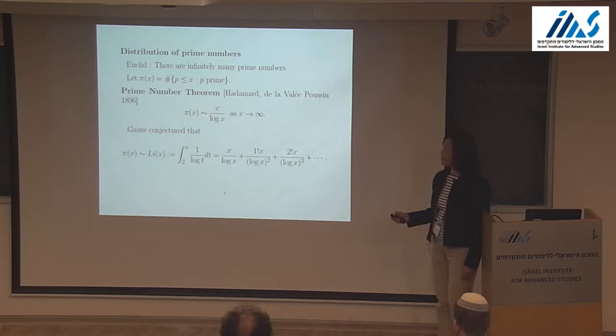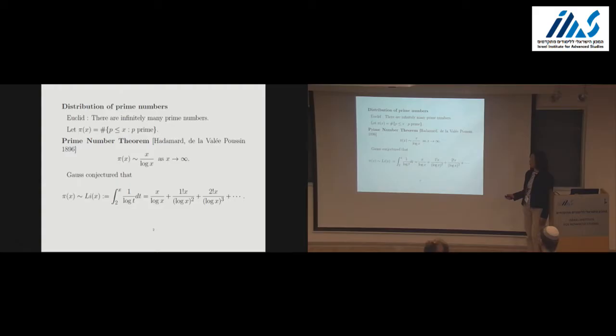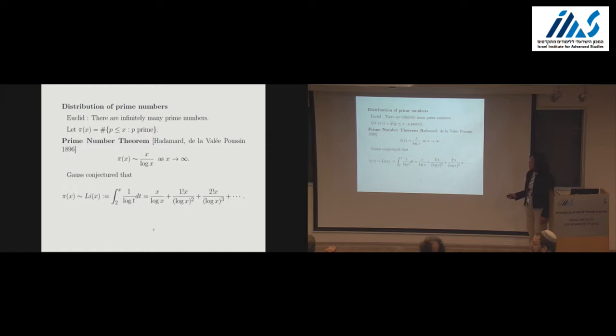Well before this theorem was proved, Gauss already conjectured that π(X) should behave like the logarithmic integral, namely the integral from 2 to X of 1 over log t dt. If one uses integration by parts, you will see that the first term is exactly X over log X, so we can also say that π(X) behaves like the logarithmic integral. Numerically, Li(X) approximates π(X) better than X over log X.